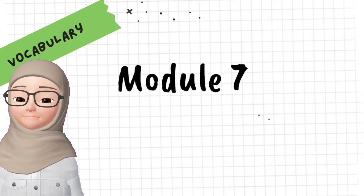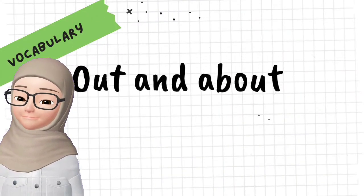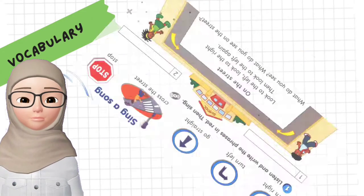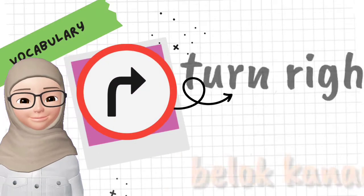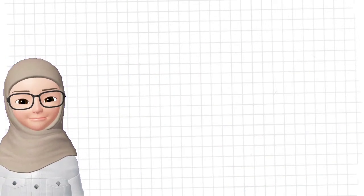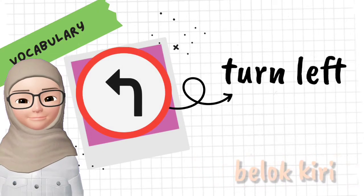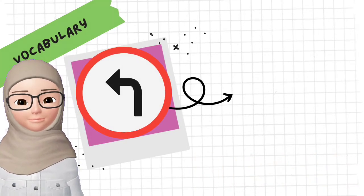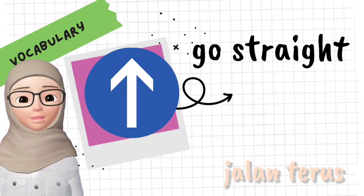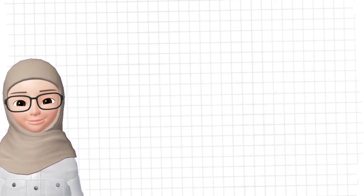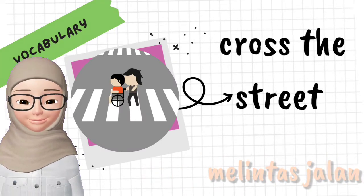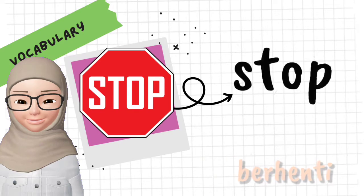Module 7: Out and About. Sing a song. Vocabulary: Turn right, turn left, go straight, cross the street. Stop.